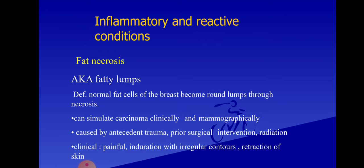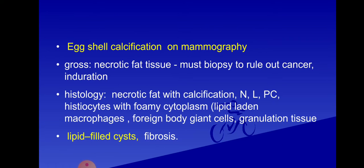Fat necrosis may present with irregular contour, and necrotic fat lumps are associated with retraction of skin, which is why they simulate carcinoma clinically. Mammographically, calcification may be present and can look like a carcinoma. The causes of fat necrosis include any trauma, prior surgical intervention, or exposure to radiation. On mammography, calcification appears as egg-shell calcification — this typical egg-shell appearance is also seen in carcinoma, making it appear like a malignant lesion.